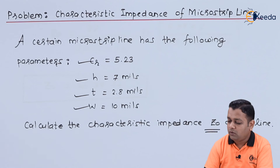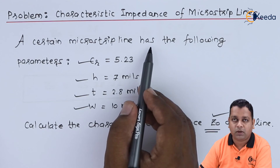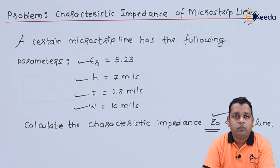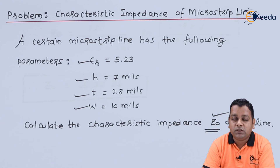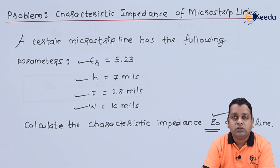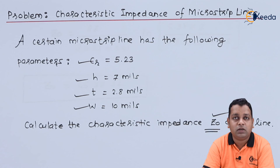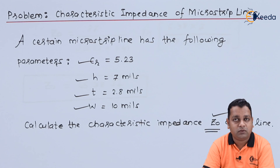Thus, we have determined the characteristic impedance Z0 for the given micro strip line. In the next lecture, we will continue with the same chapter to address power losses associated with micro strip lines. I hope you enjoy learning microwave engineering — for more details, please subscribe to the iKida channel. Thank you.